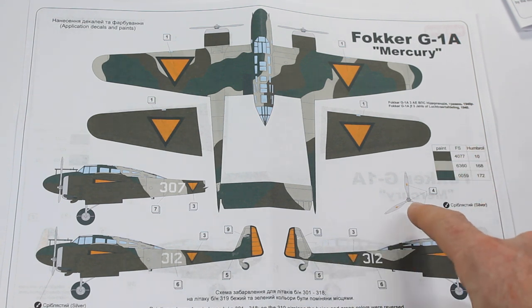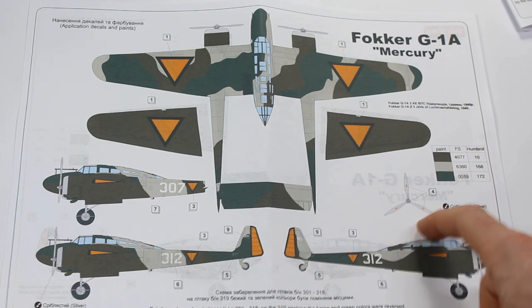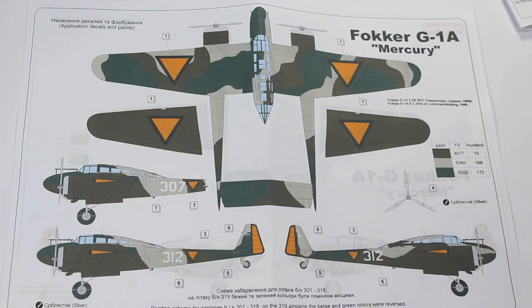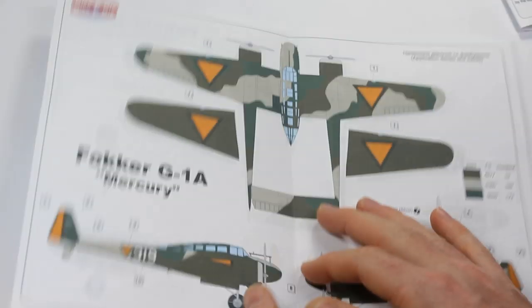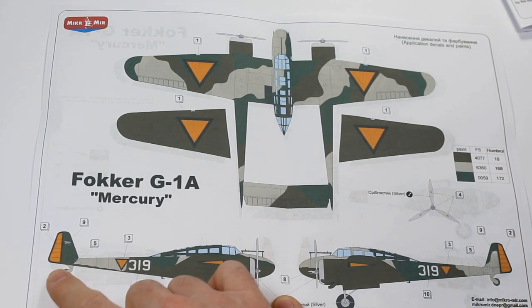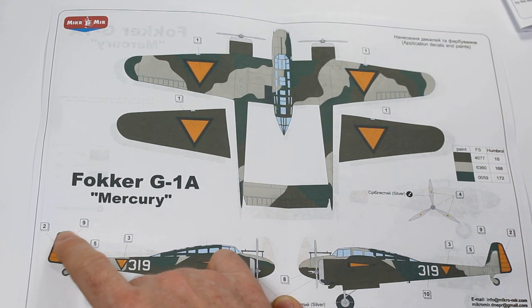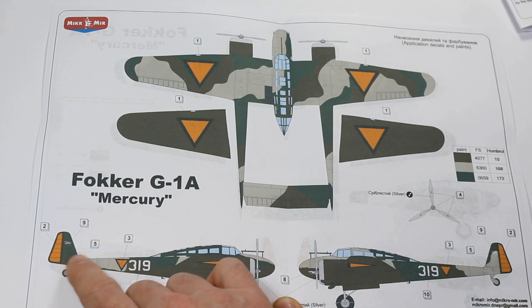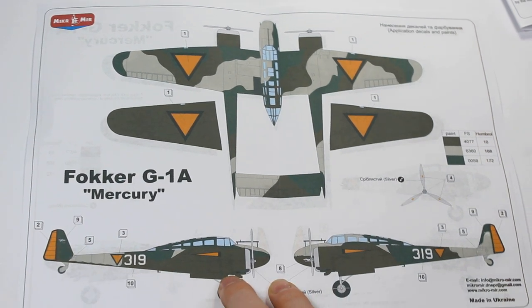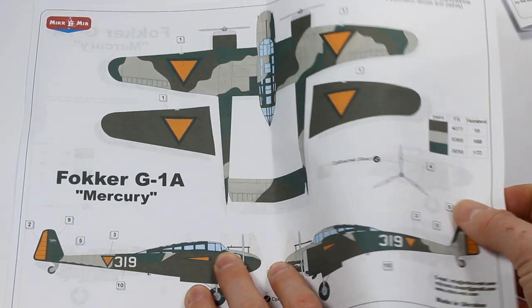This is also catering for the decal application. So we've got logos for the propellers and the large triangles again with the identification marks and orange on the rudder, as well as a small Fokker inscription on the fin. Color callouts are FS numbers and Humbrol.